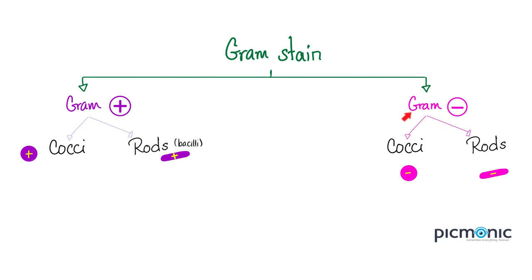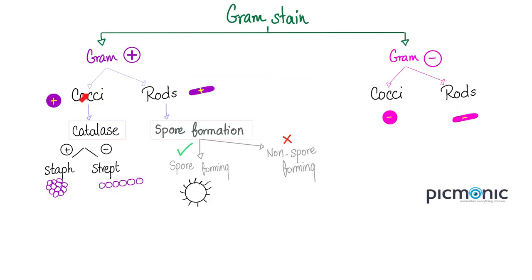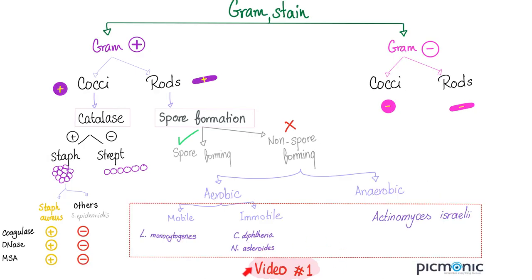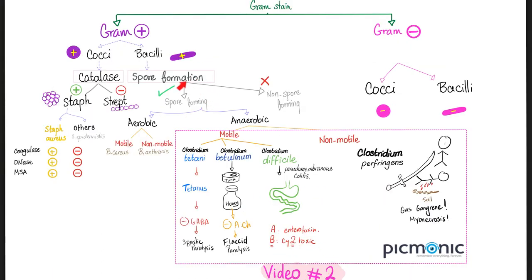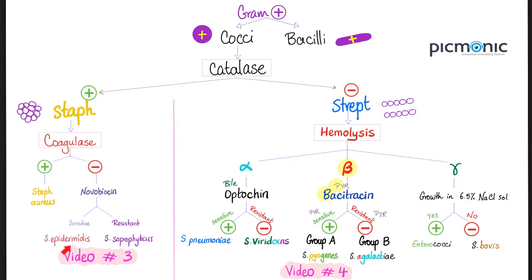Gram positive bacteria can be cocci (spherical) or rod-shaped. Gram negatives are also cocci or rods. Gram positive cocci are divided into catalase positive and catalase negative. Gram positive rods are divided into spore-forming and non-spore-forming. In video one we talked about non-spore forming gram positive rods, and in video two we covered spore-forming anaerobic gram positive rods — the famous Clostridia or Clostridioides.